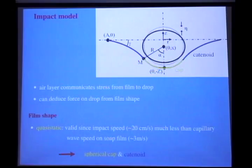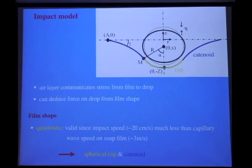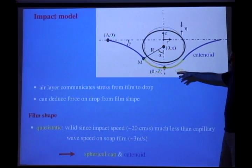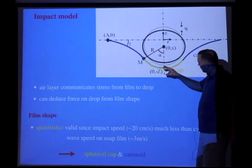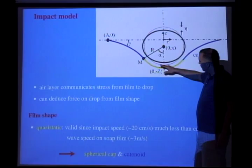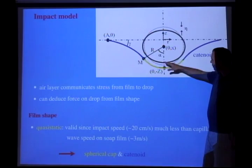The model is quite simple, and you're all capable of doing this. During the impact, you have this air layer between the drop and the film, and this communicates stress between the two — this is a lubrication layer. Because it's so thin, there can be no gradients in pressure across the thin layer. Its role is simply to communicate stresses from the drop to the film. So we know the force acting on the film is equal and opposite to the force acting on the drop.